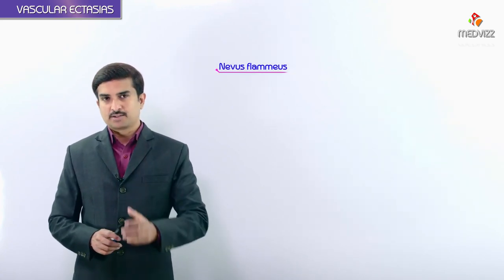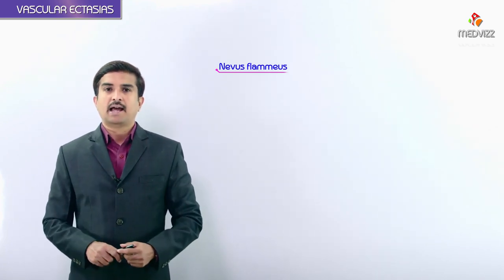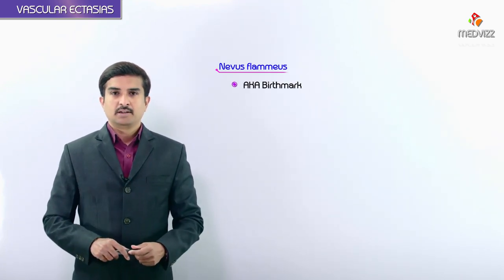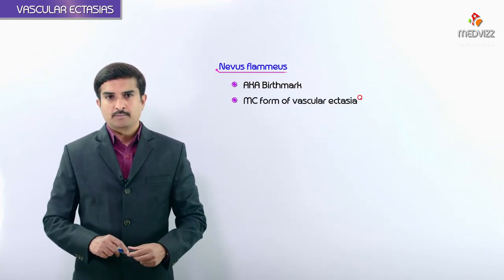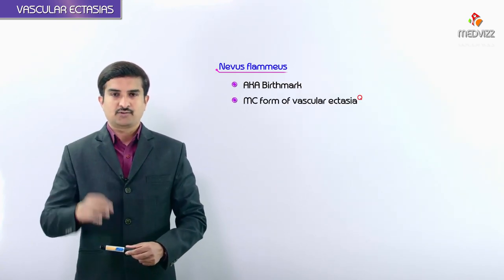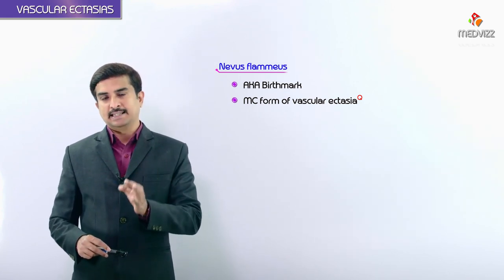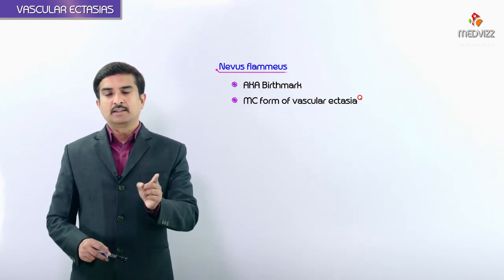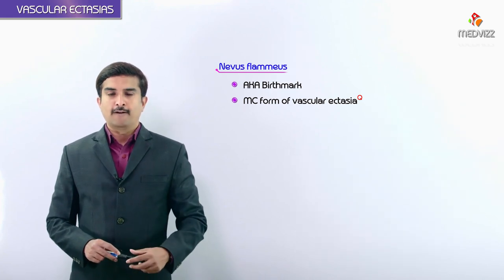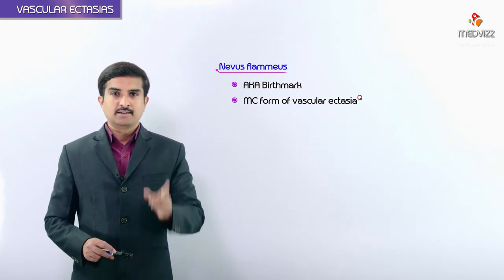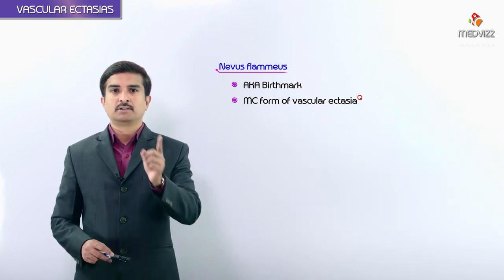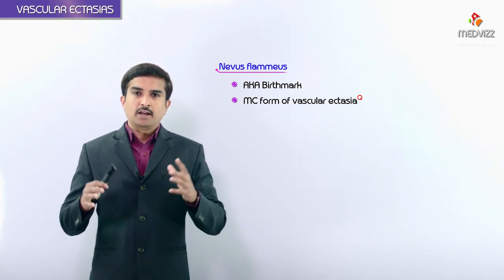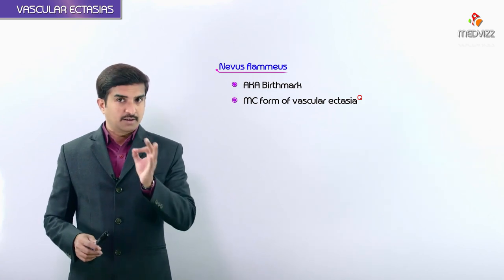The first type is nevus flammeus, often termed as a birthmark. Remember that it is the most common form of vascular ectasia — this is what you will likely see in the exam. Nevus flammeus is also called the birthmark.